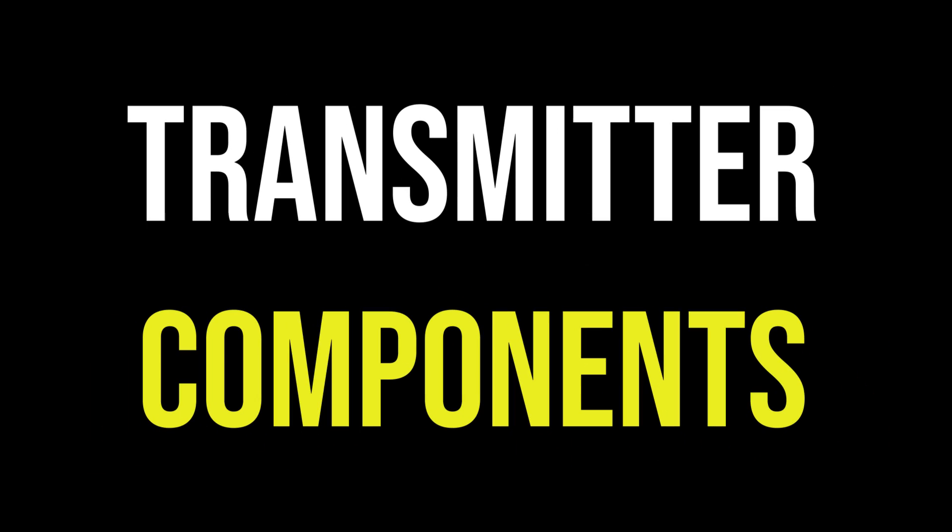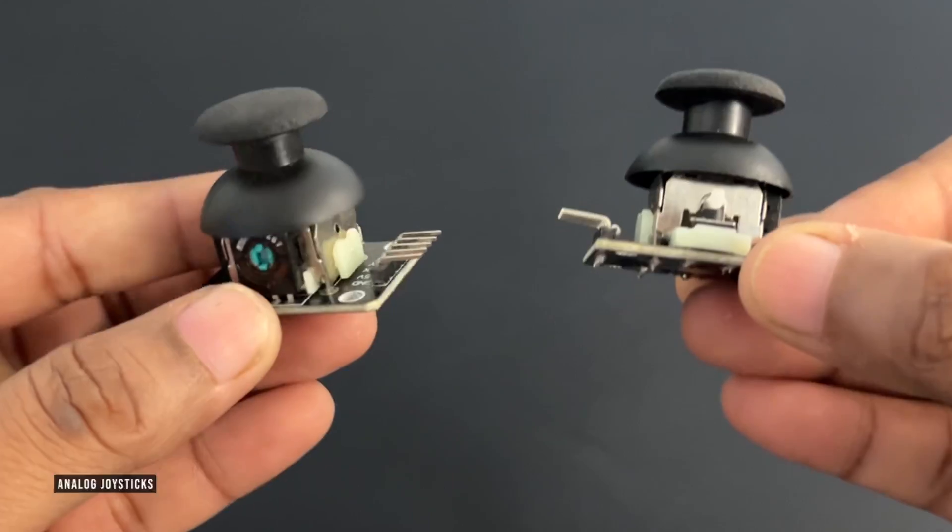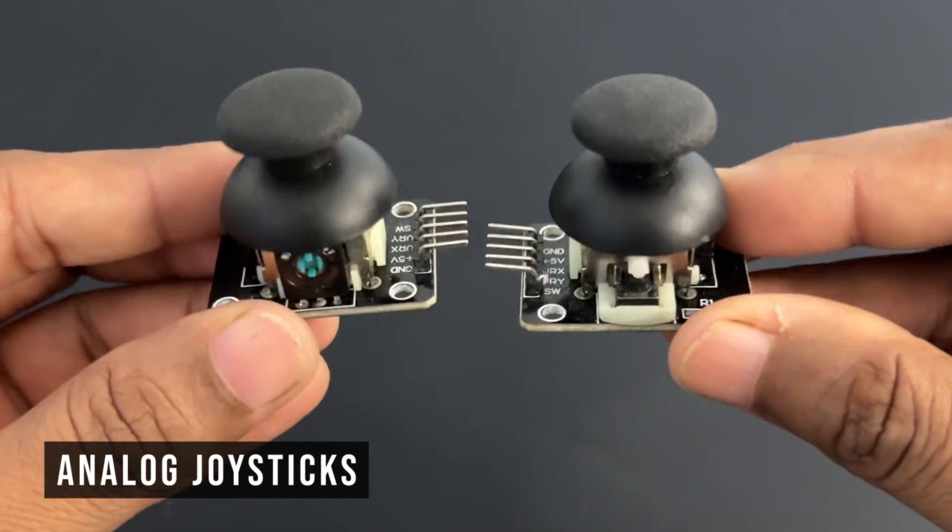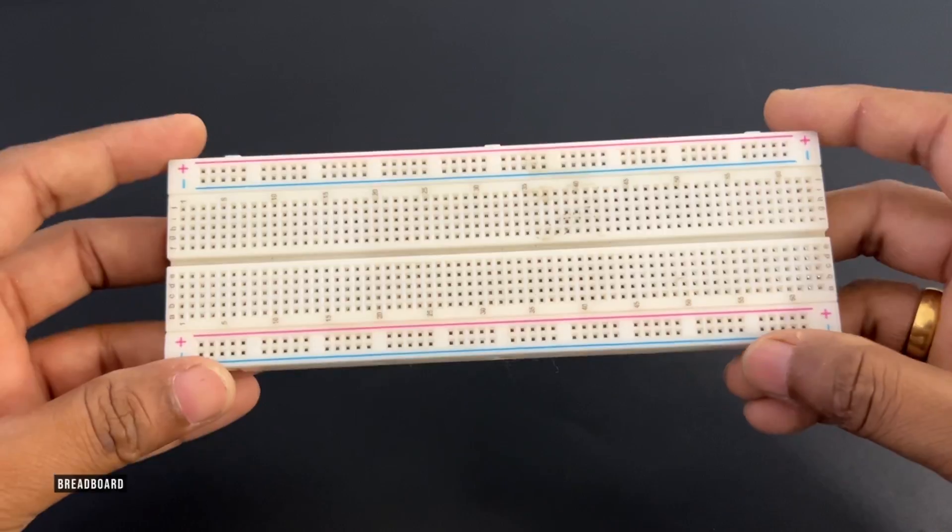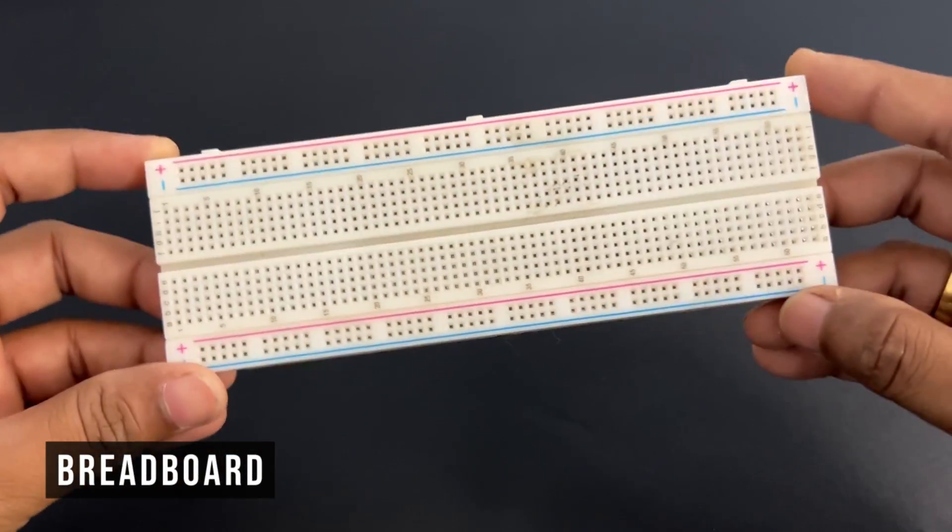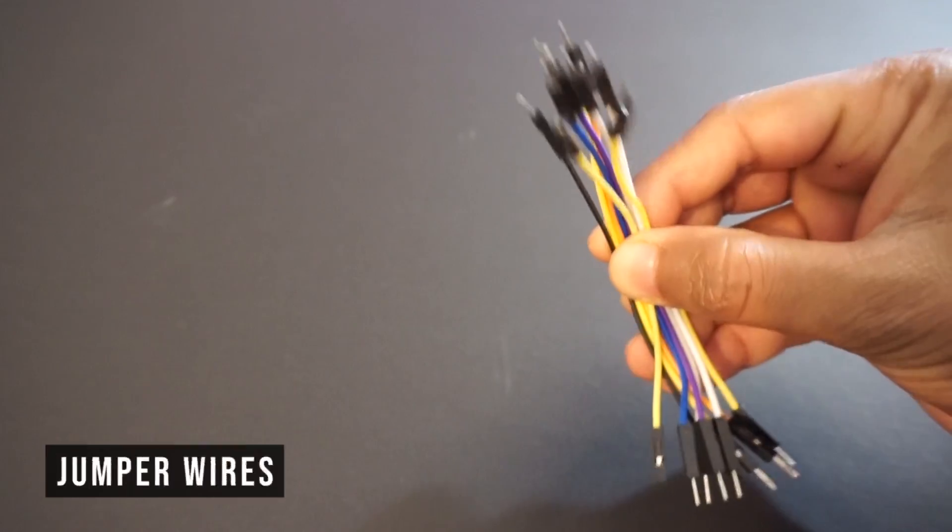Let's first make the transmitter. We will need ESP32 module, analog joystick, we need 2 pieces, 5V DC supply or any power bank, breadboard, double sided tape and few jumper wires.